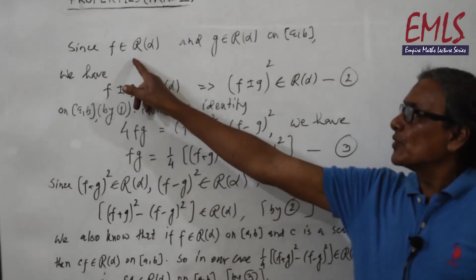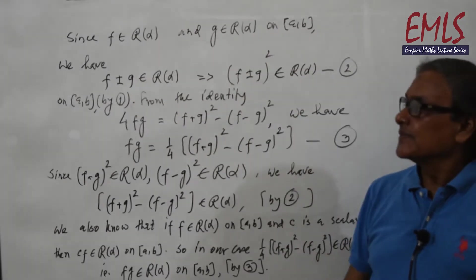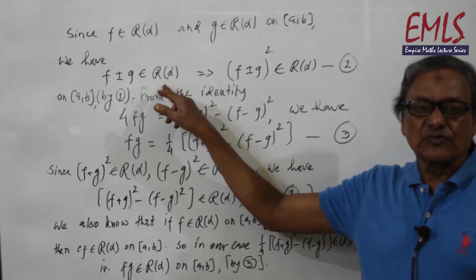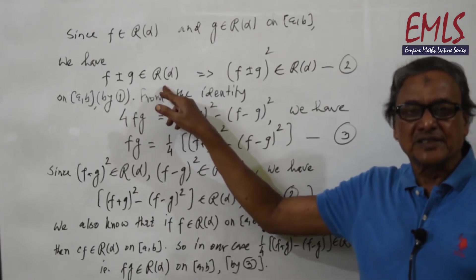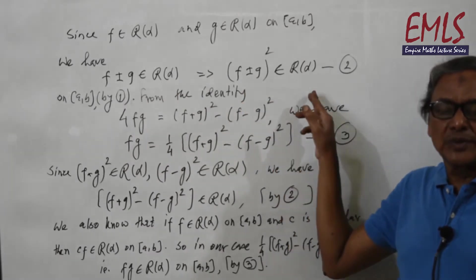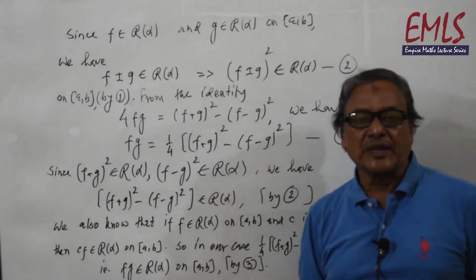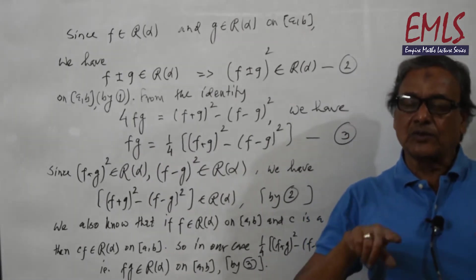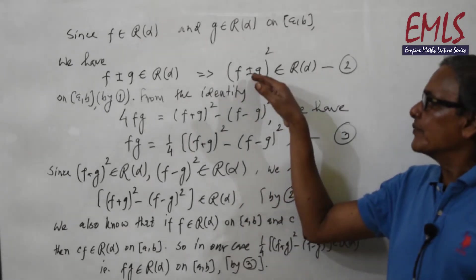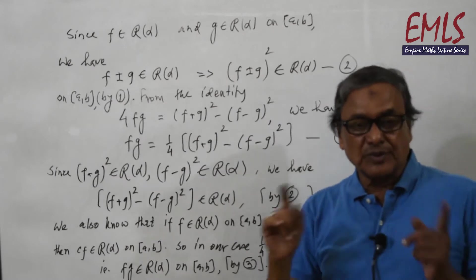Since f and g both belong to Rα on [a, b], we have f ± g belongs to Rα. This follows from the properties of Riemann-Stieltjes integration, and this implies (f ± g)² belongs to Rα on [a, b], by step 1, since if f belongs to Rα then f² also belongs to Rα. So (f + g)² and (f − g)² both belong to Rα.